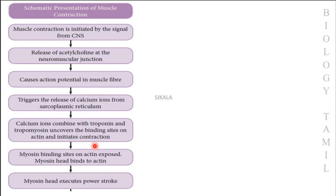Calcium ions bind with troponin — a protein — and with tropomyosin. When calcium binds to troponin, the tropomyosin shifts, exposing the binding sites on the actin filament. Myosin is then exposed on the actin side.